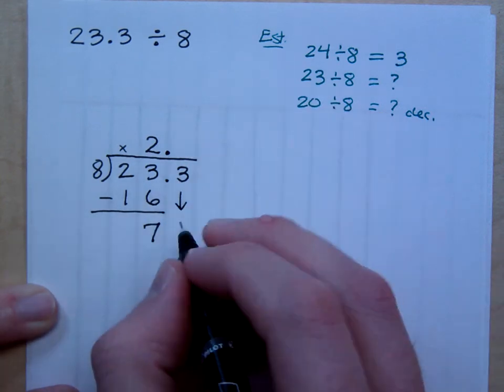How many times? 2 times. So that's 2 times 8, which is 16. So 23 minus 16, this is where you've got to know how to do your subtraction. 23 minus 16 is what? It's 7.